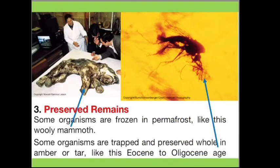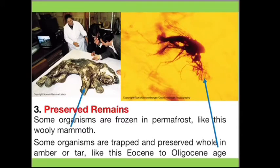Next is preserved remains. These are intact remains of animals, often including preserved skin, muscle, bone, hair, and internal organs. Fossils form when an entire organism becomes encased in materials such as ice or volcanic ash, or sometimes buried in a pit of bugs. This is a rarer type of preservation. Examples are mammoths — frozen in permafrost, as shown on the left side of the figure — or organisms like this mosquito that might be accidentally trapped and preserved whole in amber or tar.